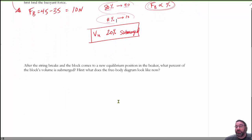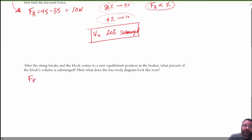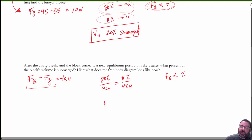After the string breaks and the block reaches equilibrium, there's no tension. The buoyant force equals the gravity force, which is 45 Newtons. Using the same ratio: 80% is to 40 Newtons as what percent is to 45 Newtons. That gives 90% submerged at the new equilibrium position — slightly more than before, which makes sense since the buoyant force is a bit larger.